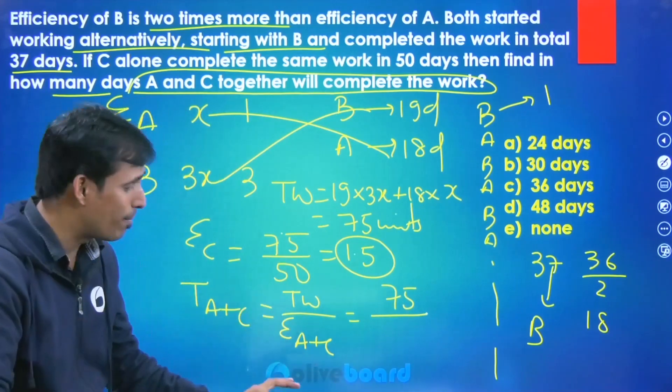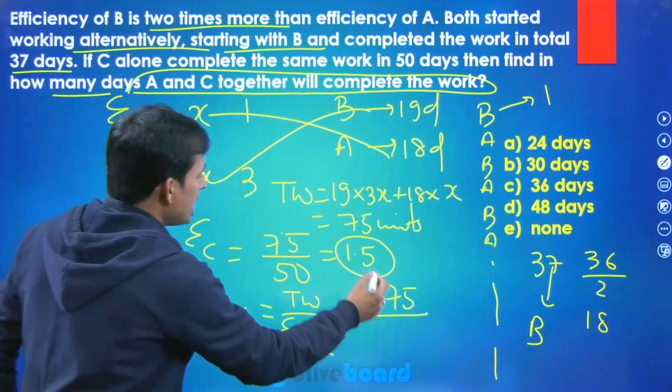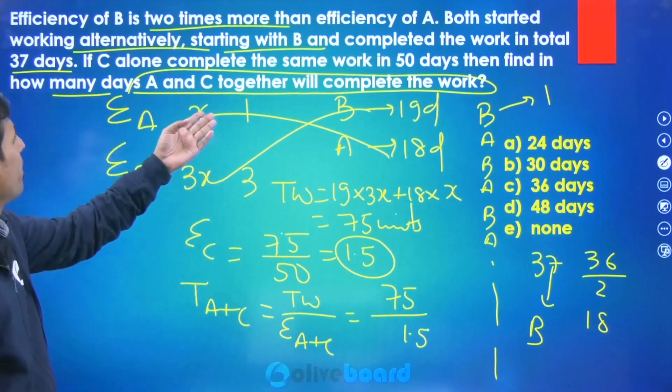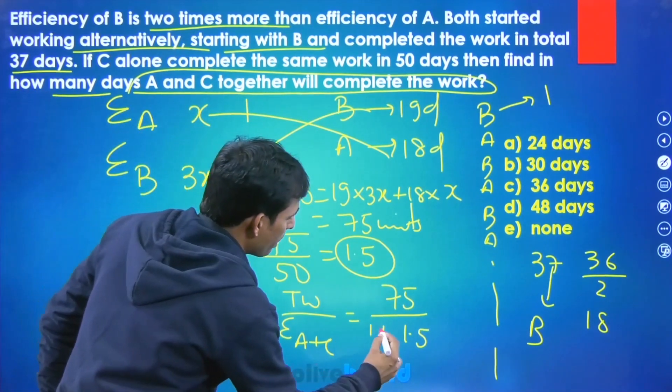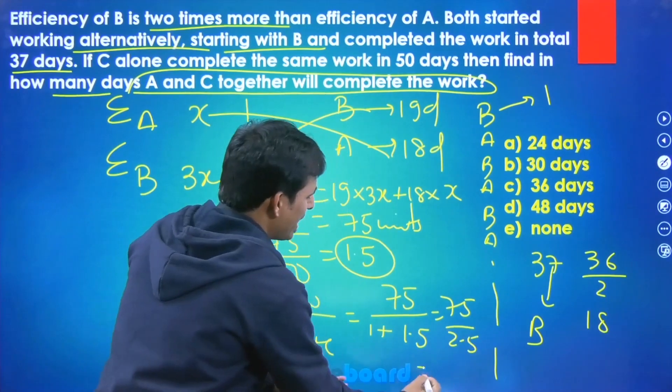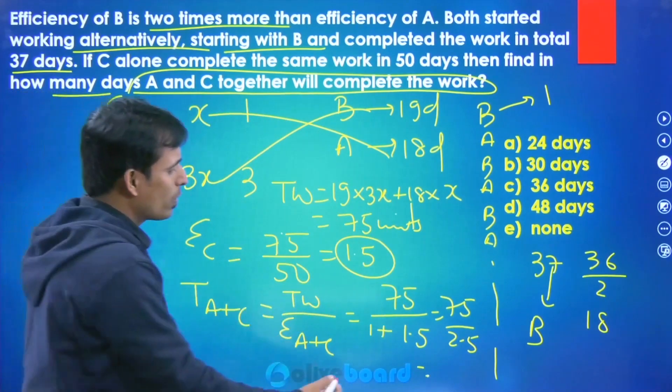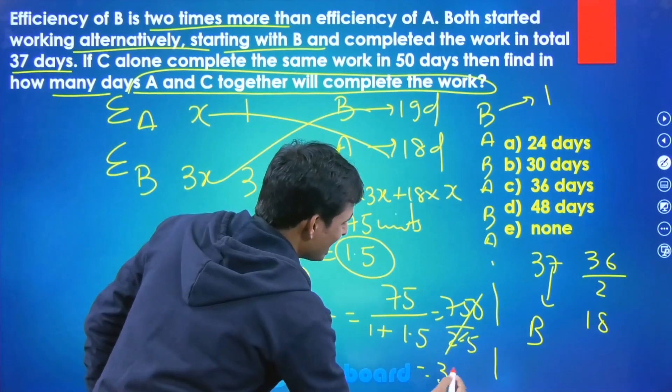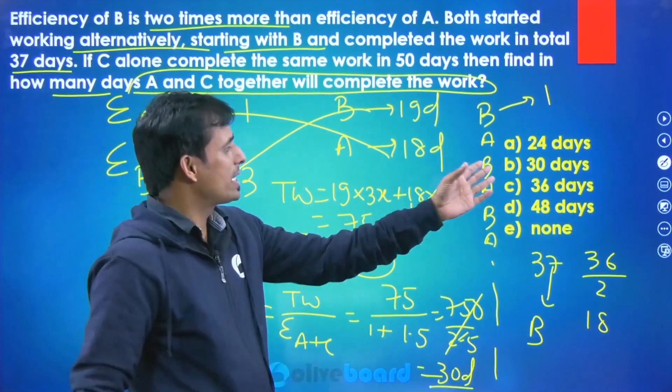So 1 plus 1.5, so this is 75 by 2.5. It's a very easy question. So what is the answer of this question? That will be equal to 30 days. So 30 days is the correct answer of this question. So option B is the correct answer of this given question.